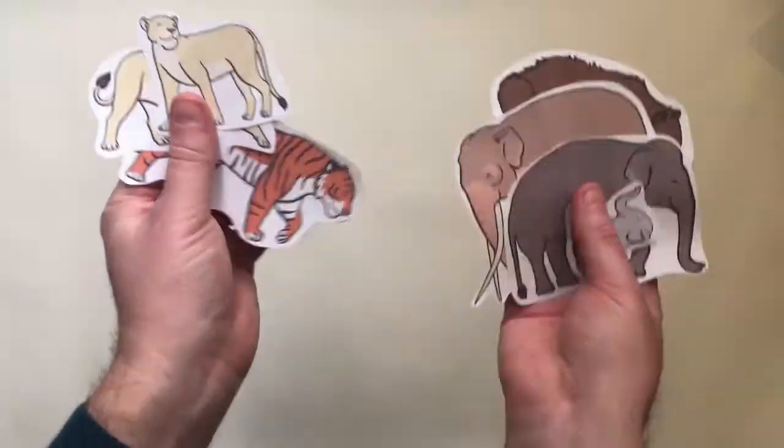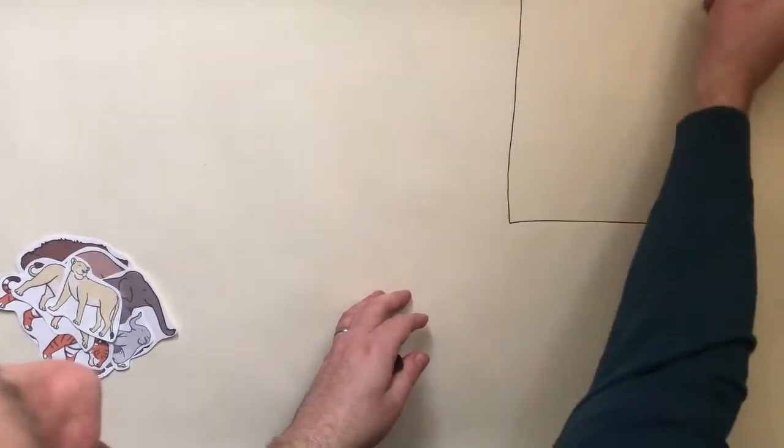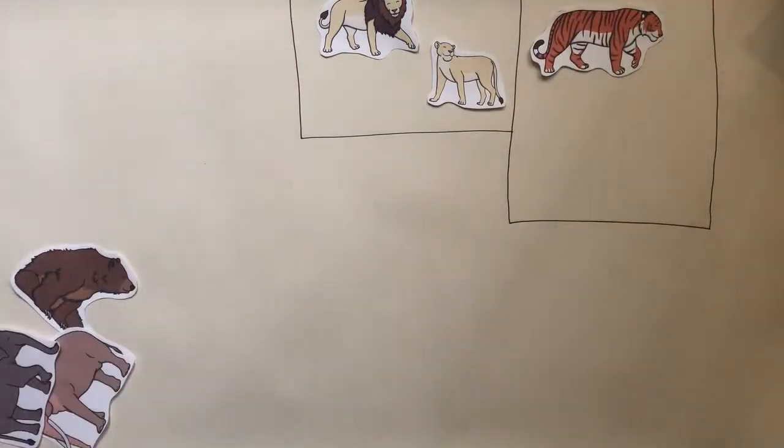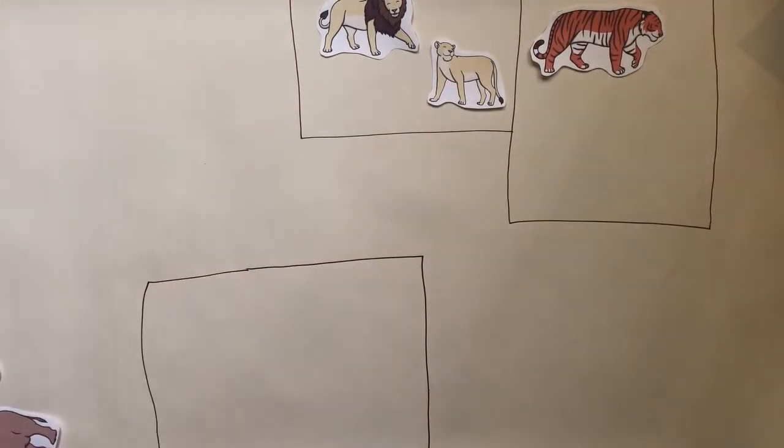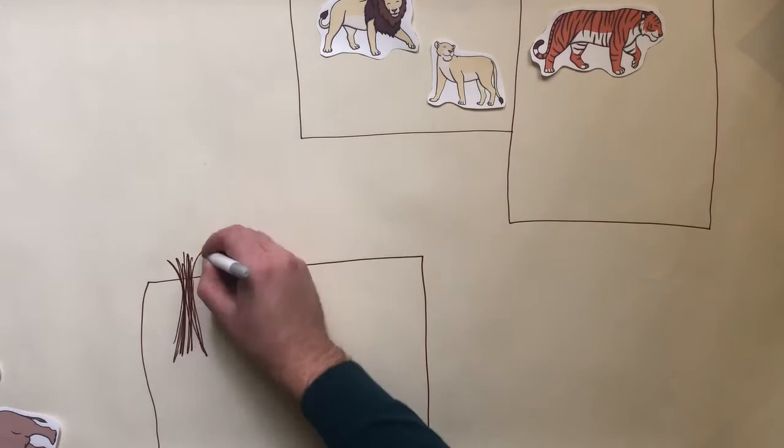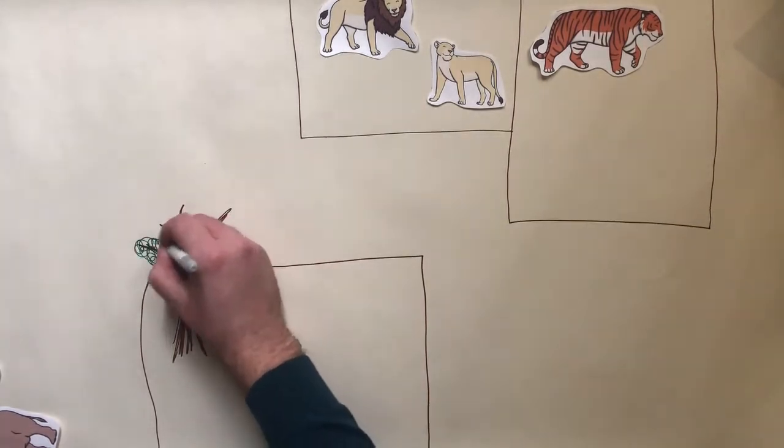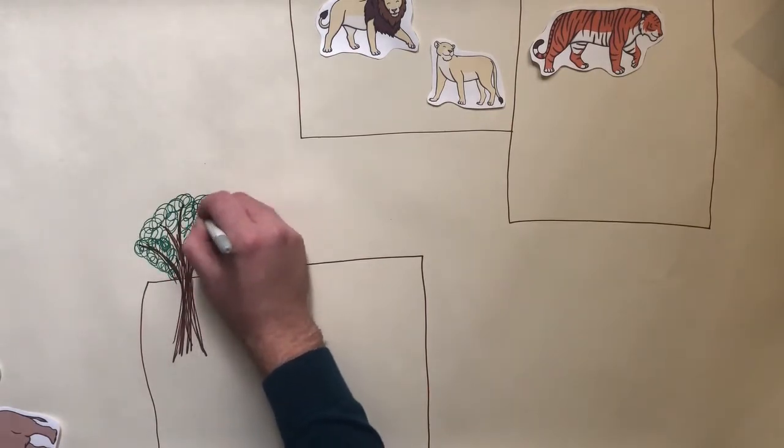But why not use them to create a zoo? Give children a large sheet of paper—old wallpaper is good for this—and let them create their own zoo pens, adding interesting features like trees.